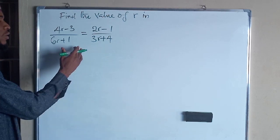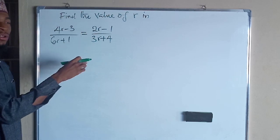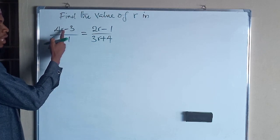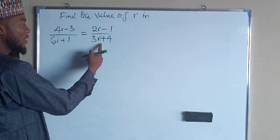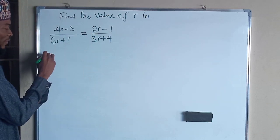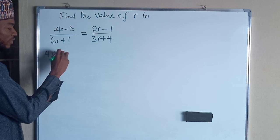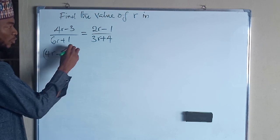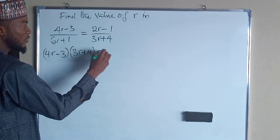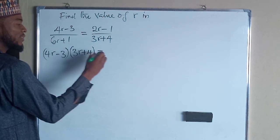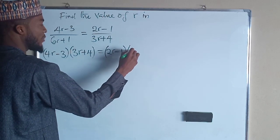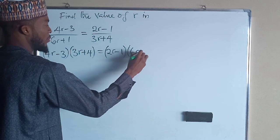So in this case, we are going to cross multiply to eliminate the fraction by taking the numerator here and multiplying the denominator here, and same thing to this one times this. So we are going to have (4R - 3) multiplied by (3R + 4) equal to (2R - 1) multiplied by (6R + 1).